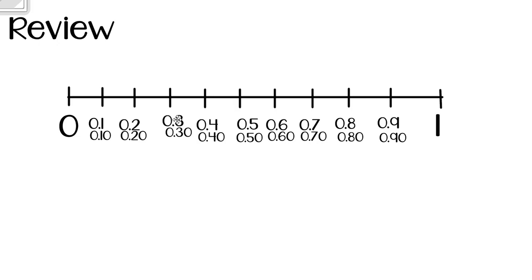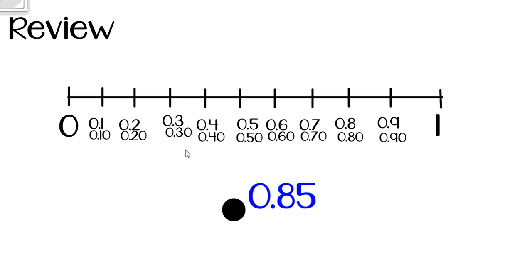We can also note the hundredths equivalents: 4 tenths equals 40 hundredths, 5 tenths equals 50 hundredths, 6 tenths equals 60 hundredths, 7 tenths equals 70 hundredths, 8 tenths equals 80 hundredths, 9 tenths equals 90 hundredths, and 10 tenths is one whole or 100 hundredths. We can use the number line to plot decimals.